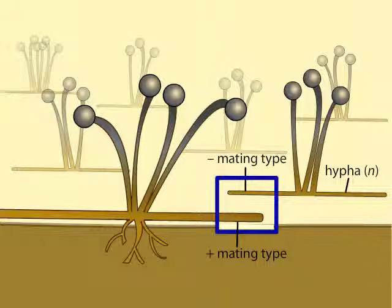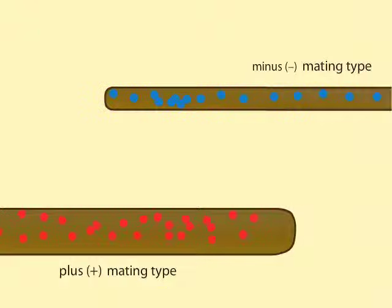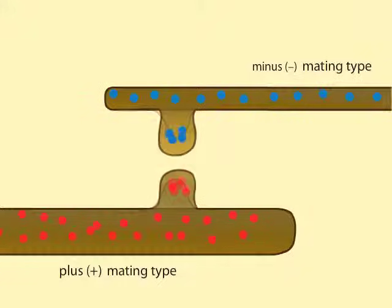They reproduce sexually when adjacent hyphae of the two types release pheromones. The pheromones trigger the hyphae to grow side branches. Note that Rhizopus generally lacks cross walls between its nuclei and most nuclei share a common cytoplasm.